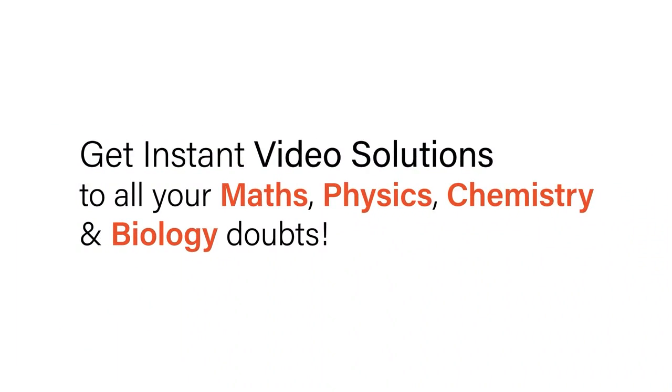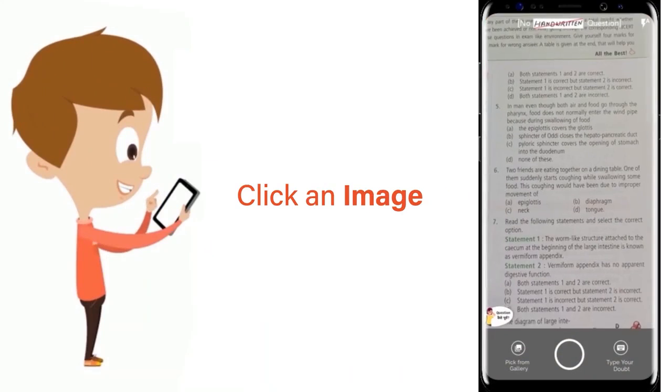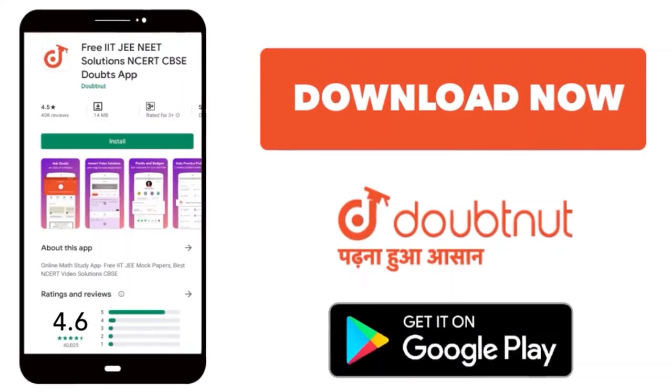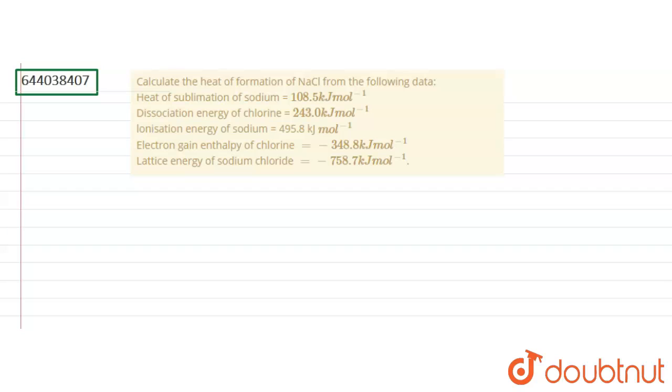With Doubtnet, get instant video solutions to all your maths, physics, chemistry and biology doubts. Just click the image of the question, crop the question and get instant video solution. Download Doubtnet app today. The question is: calculate the heat of formation delta Hf of NaCl from the following data.